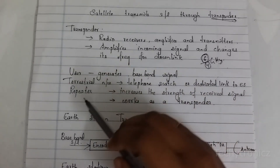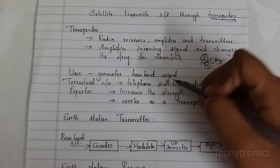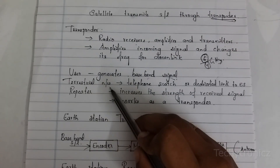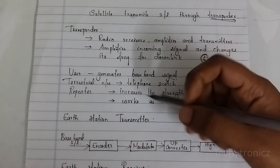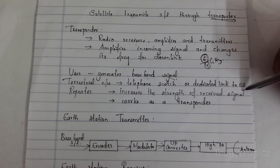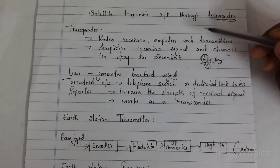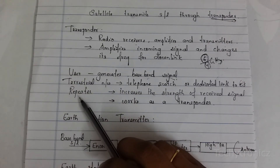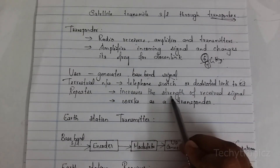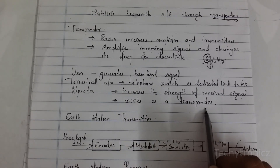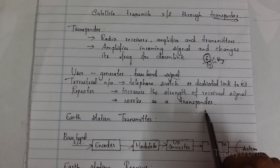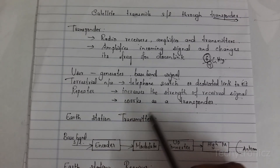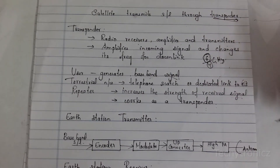In this basic block diagram, first of all, the user generates the baseband signal and sends it to the terrestrial network. The terrestrial network — nothing but a telephone switch or dedicated link to the earth station — gives the baseband signal to the earth station for further process. The earth station uses a dish antenna to transmit the signal to the satellite. In the satellite, the transponder acts as a repeater — it increases the strength of the received signal, amplifies it, changes the frequency, and sends it to the other earth station.